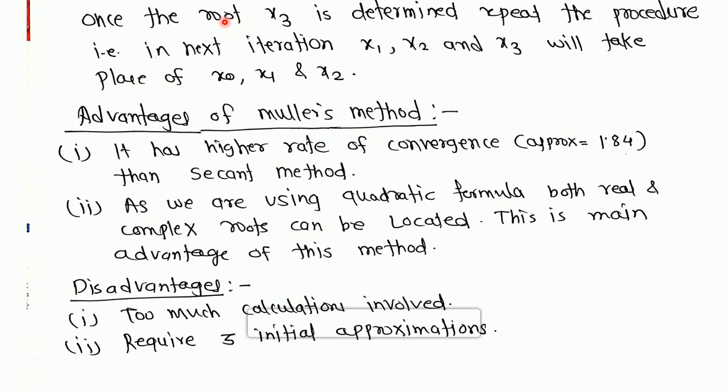Here are some advantages of the Muller method. It has a higher rate of convergence, that is nearly 1.84, which is higher than the secant method and bisection method. As we are using the quadratic formula, both the real and complex roots can be located. This is the main advantage of this method.